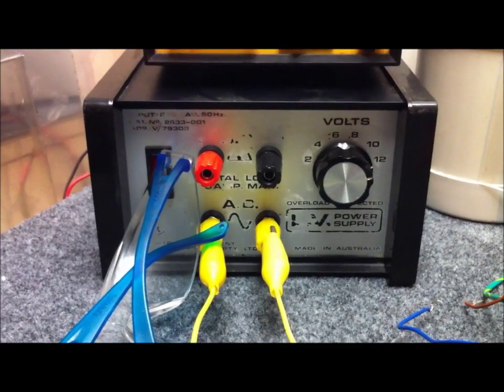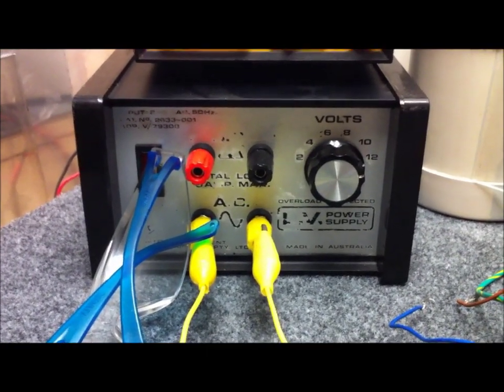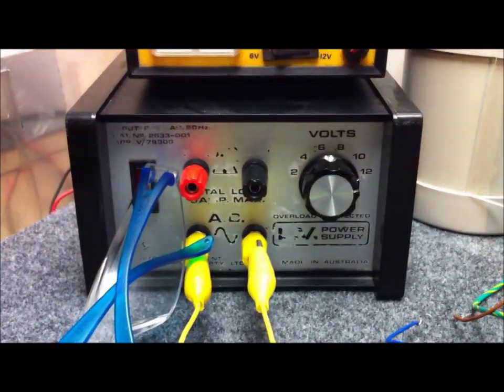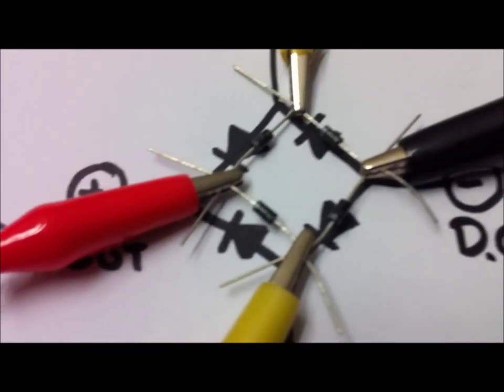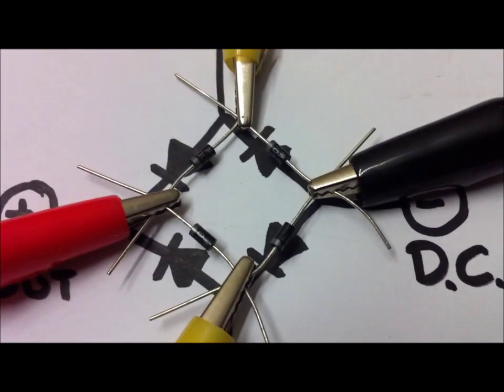Okay, AC power coming out in the yellow leads that you can see there, set to 12 volts. Those leads going over to a full wave bridge rectifier.